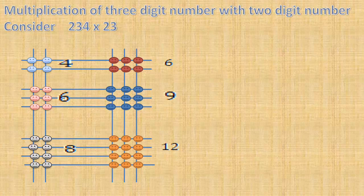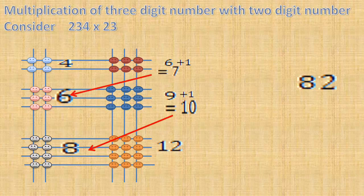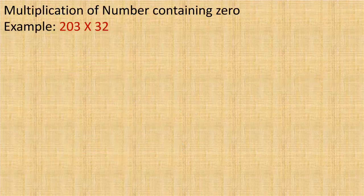Then, starting from the right bottom corner, we have 12. Write 2 in the answer and carry 1. Add it to 9: 9 plus 1 equals 10. Add this with 8: 10 plus 8 equals 18. Write 8 in the answer and carry 1. 6 plus 1 equals 7; add it with 6: 7 plus 6 equals 13. Write 3 in the answer and carry 1. And 4 plus 1 gives 5. Write it in the answer. The multiplication of 234 and 23 is 5382.